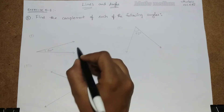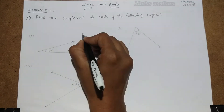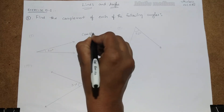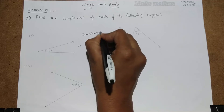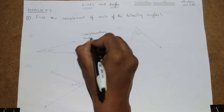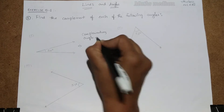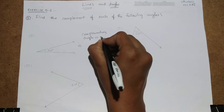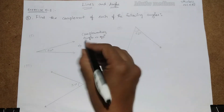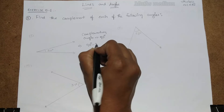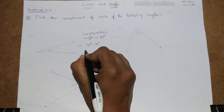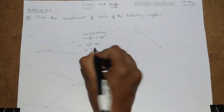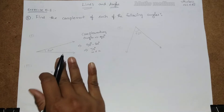Let us start with the first one. This is 20 degrees. In order to find the complement angle, we know that the sum of complementary angles is equal to 90 degrees. So, 90 degrees minus the given angle — 90 degrees minus 20 degrees — is nothing but 70 degrees, which is the complement of this given angle.